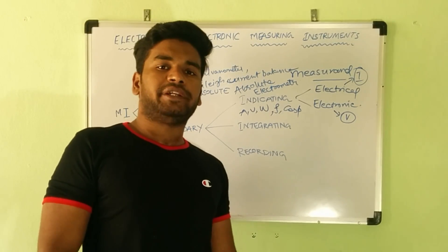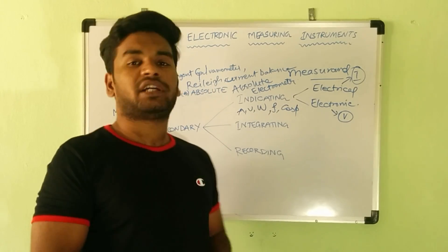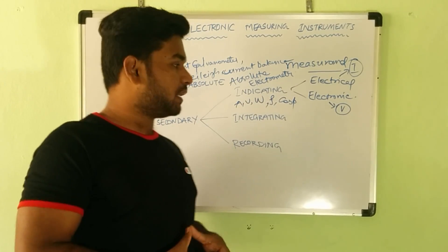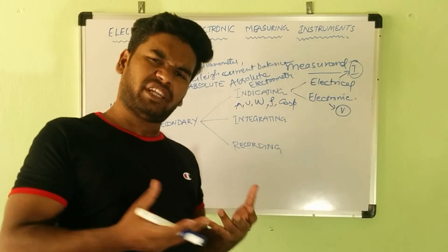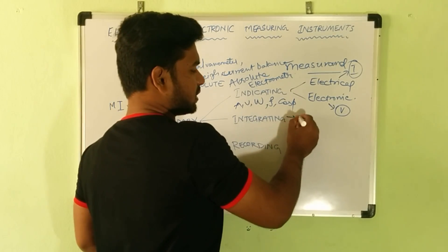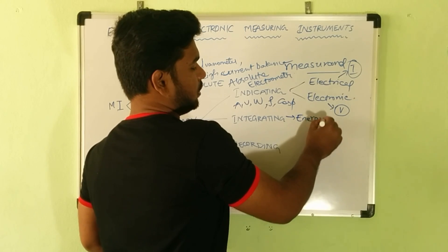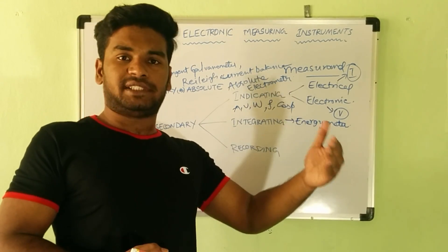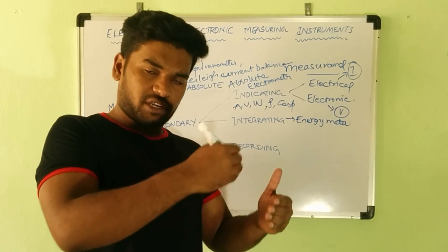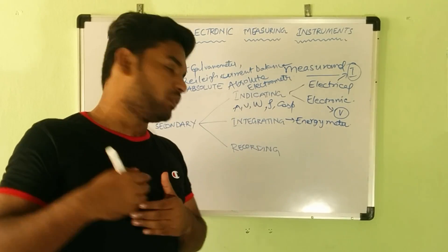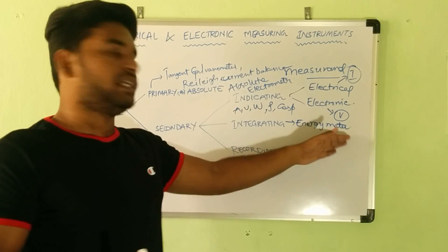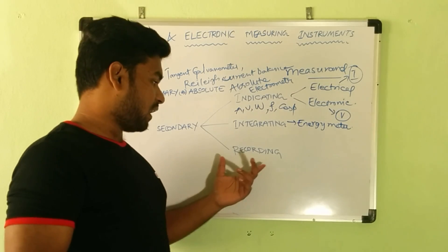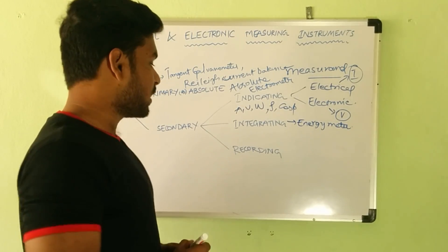Then we have integrating type instruments. Integrating instruments give the cumulative value of the quantity being measured. What would be a cumulative value? Simply put, energy meters are integrating type instruments — they accumulate and measure total energy consumed over time.